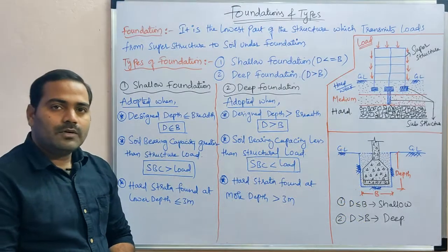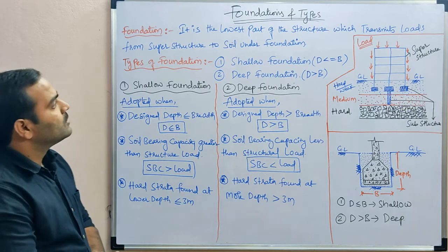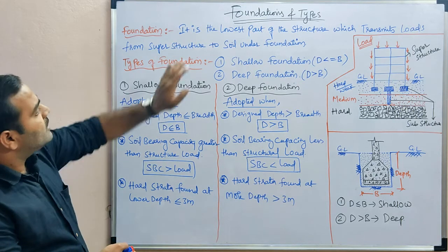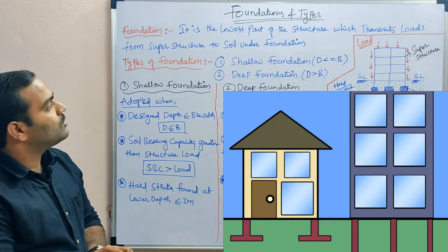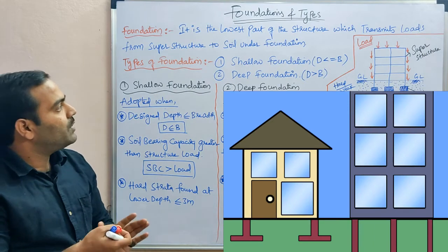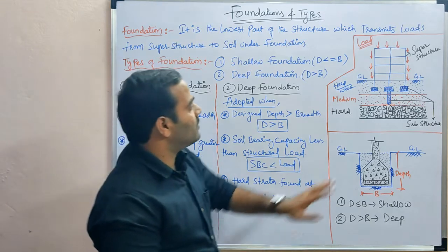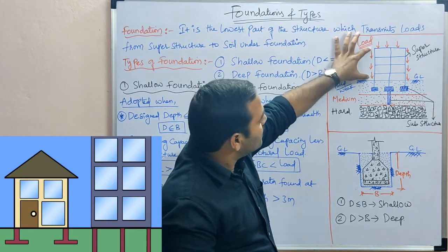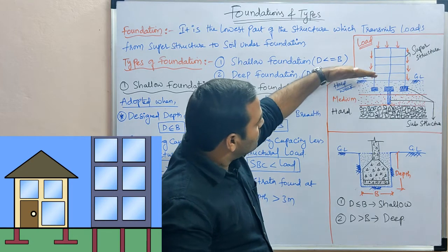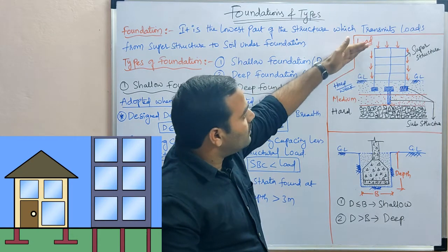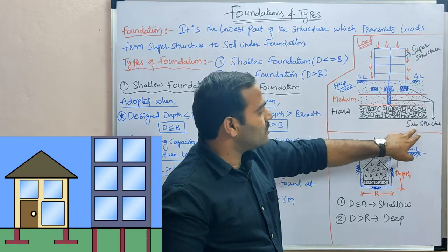Foundation is the lowest part of the structure which transfers the superstructure load to the subgrade or soil which is under the foundation. If you observe this drawing, this is the structure and this is the ground level. The structure above ground level is called superstructure and the structure which is below ground level is called substructure.